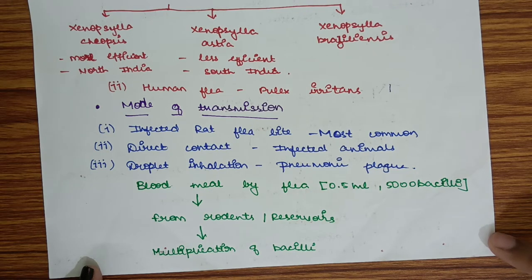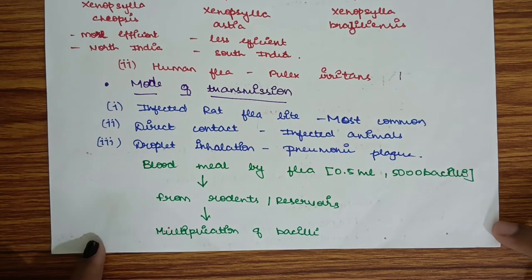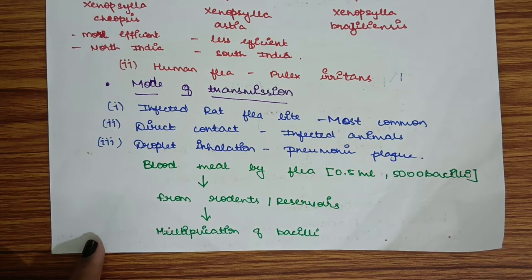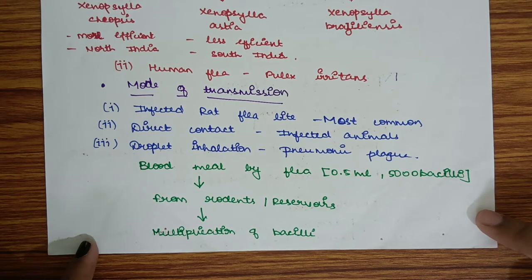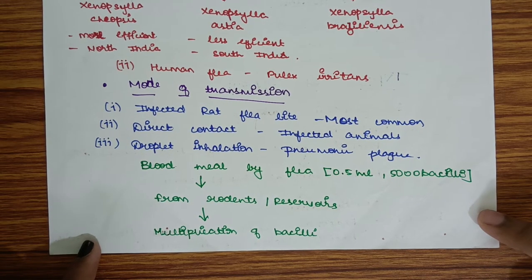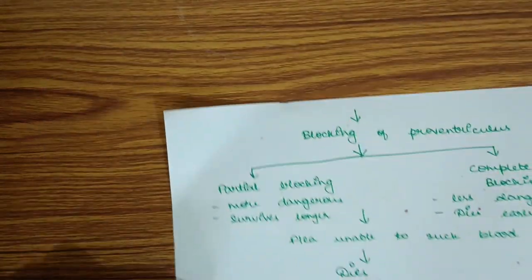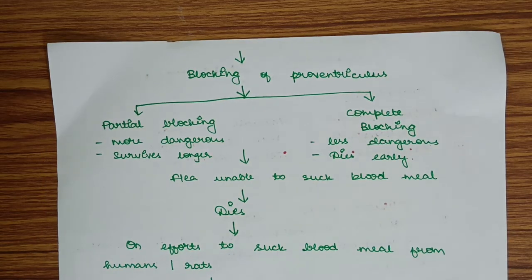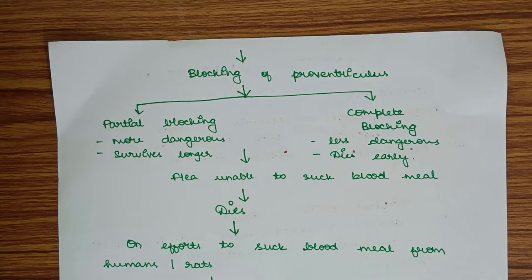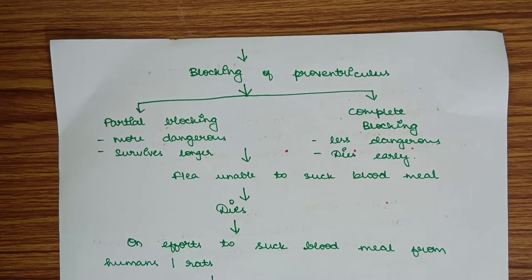In actual pathogenesis, blood is taken by the flea from infected rodents. About 0.5 ml of blood containing about 5000 bacilli is taken. These bacilli multiply in the gut of the flea, leading to blocking of the proventriculus, which may be partial or complete. Partial blocking is more dangerous as the flea survives longer; complete blocking is less dangerous as the flea dies early.